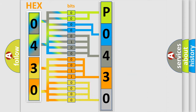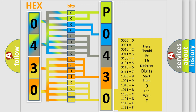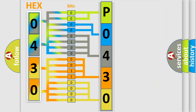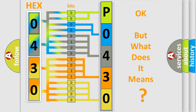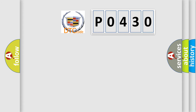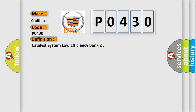A single byte conceals 256 possible combinations. We now know in what way the diagnostic tool translates the received information into a more comprehensible format. The number itself does not make sense to us if we cannot assign information about what it actually expresses. So, what does the Diagnostic Trouble Code P0430 interpret specifically for Cadillac car manufacturers?